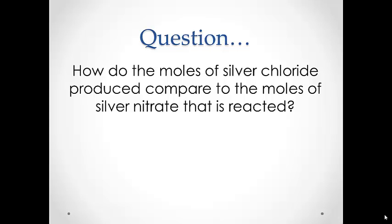For our first silver lab, we added copper wire to silver nitrate. Copper was pulled into solution with the nitrate and silver precipitated out. In this experiment, we will follow our silver ion through another reaction to produce silver chloride. We will compare the moles of silver chloride to the original amount of silver nitrate that we reacted in the silver lab.